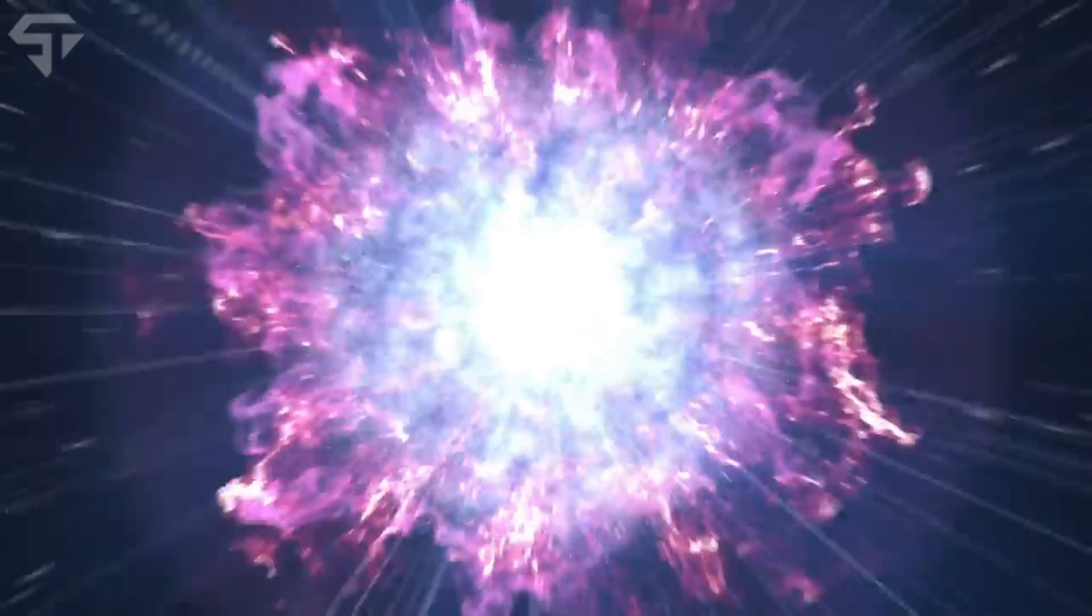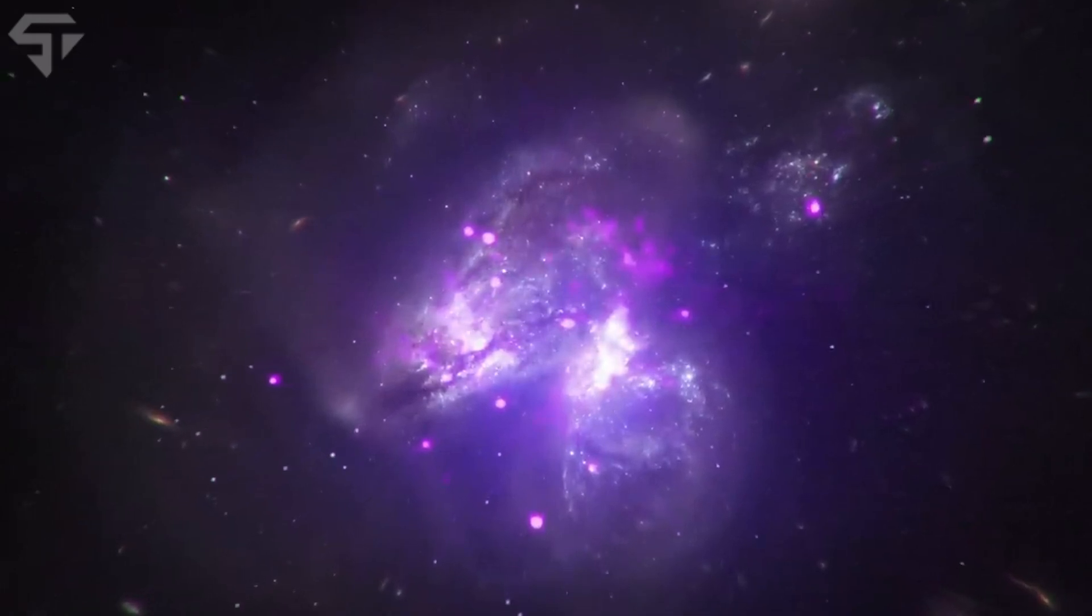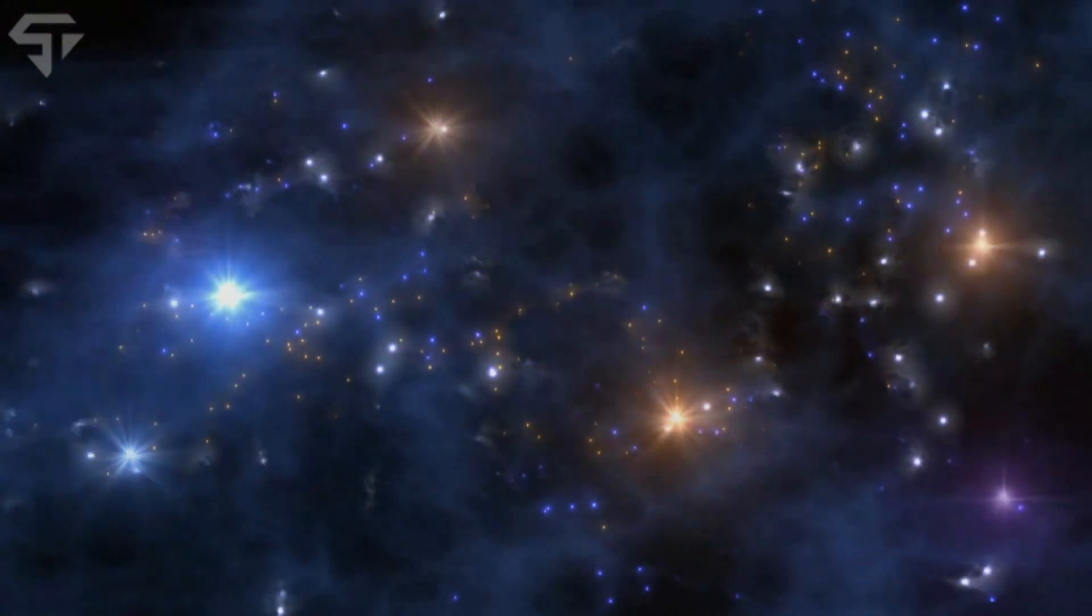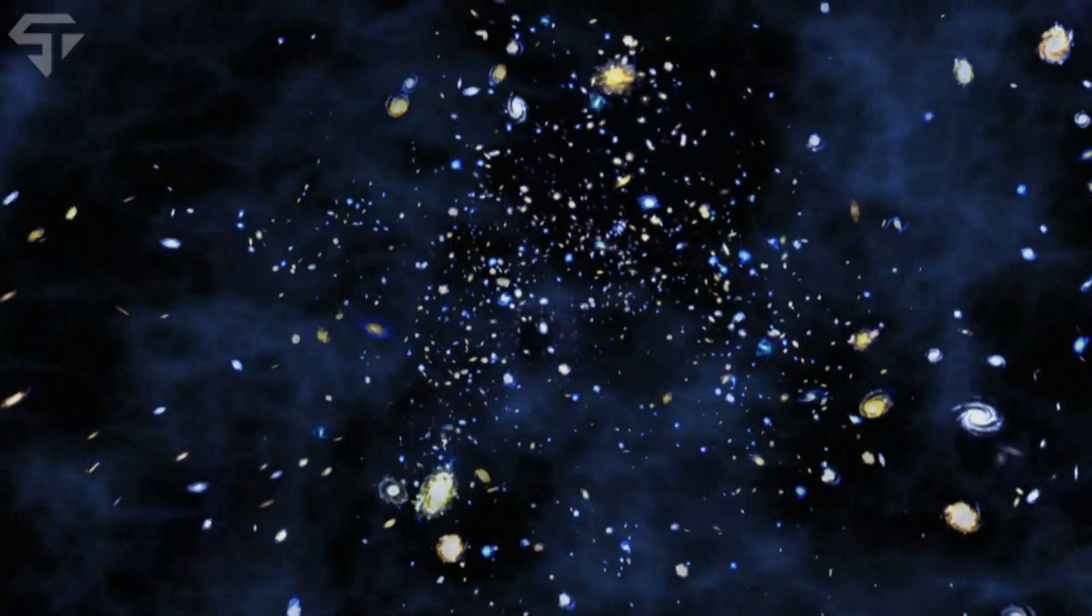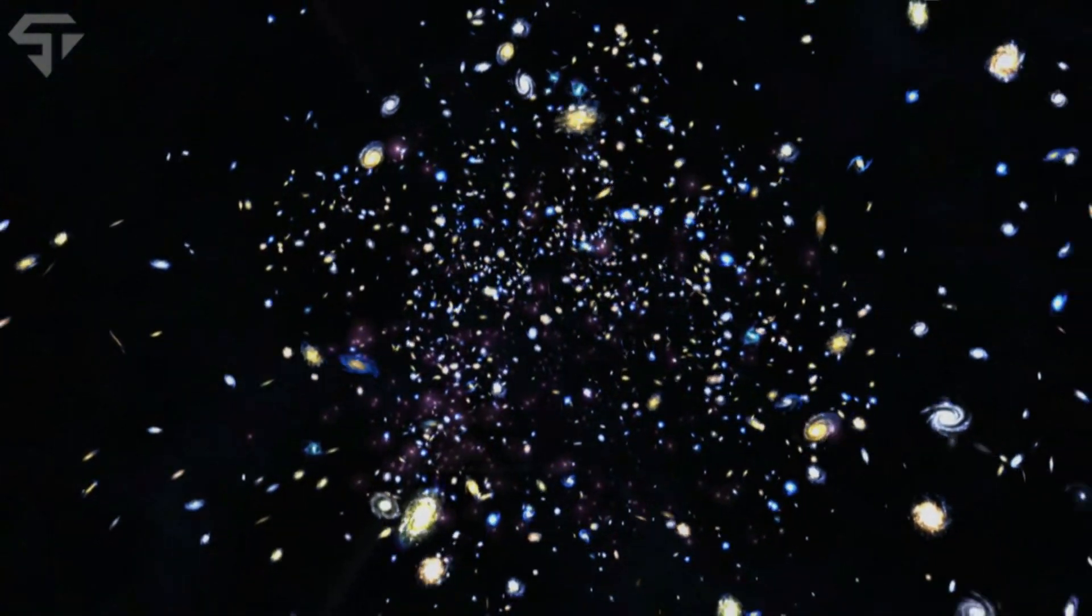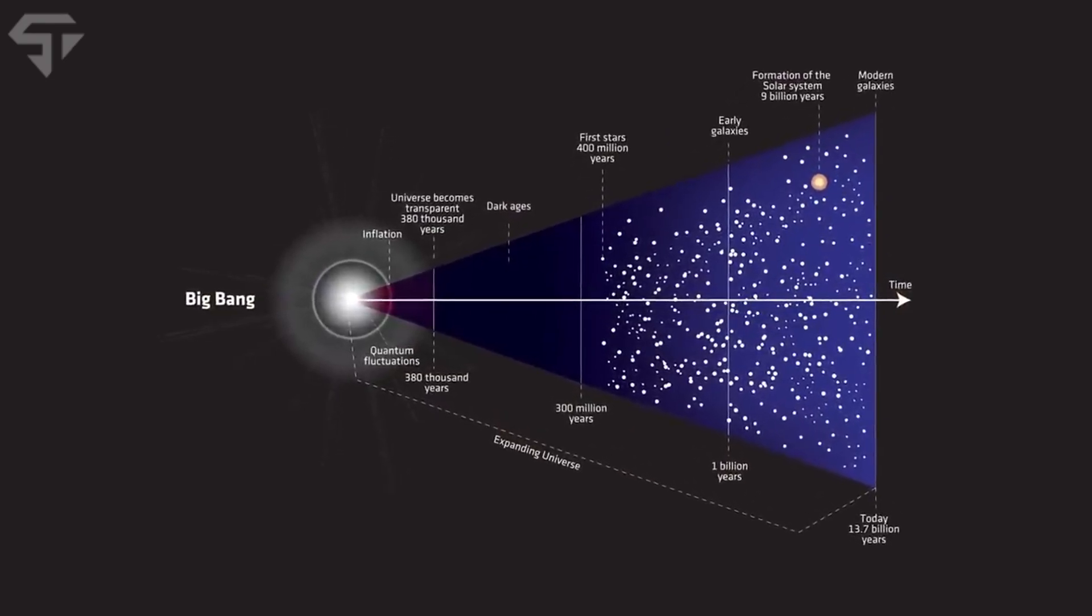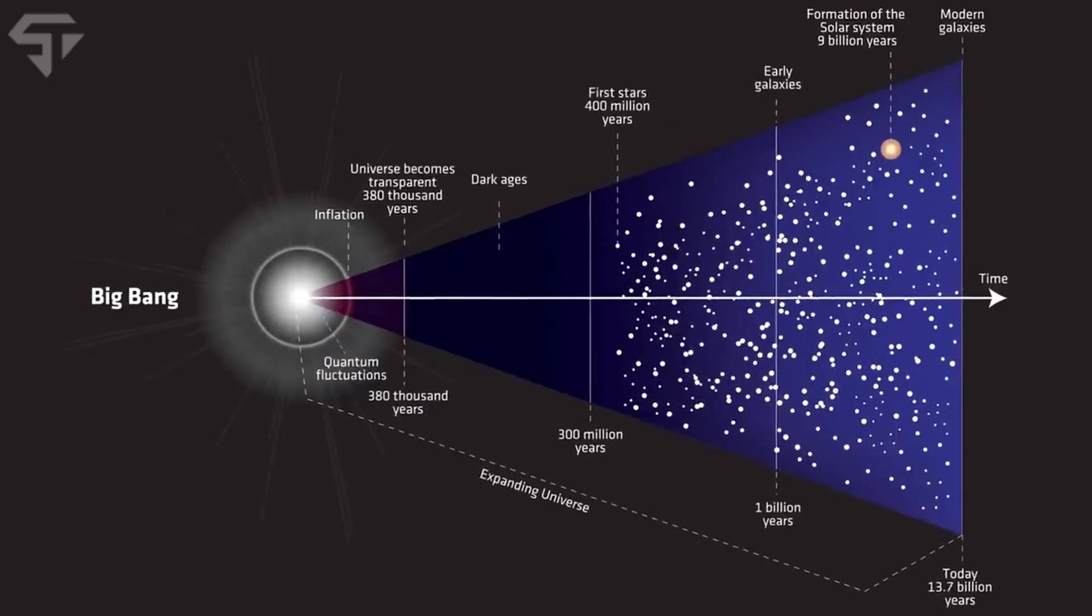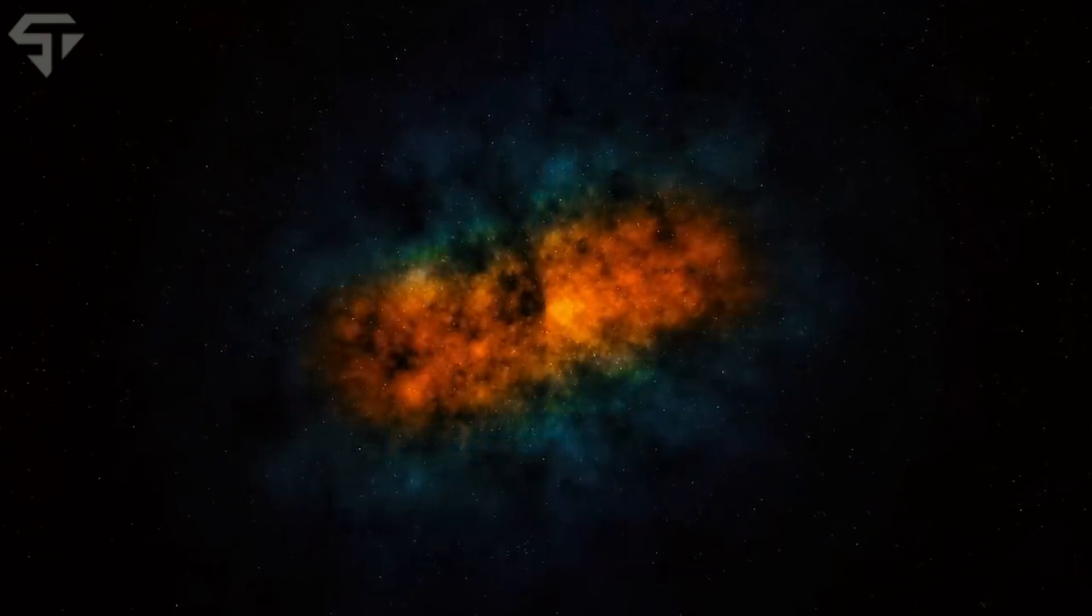This concept is known as the cyclic model, which suggests that the universe goes through an eternal series of expansions and contractions. Could our universe have been preceded by a previous universe? The possibility is an tantalizing one. According to string theory, which proposes that the universe consists of tiny, vibrating strings, there could be multiple dimensions and universes beyond our own.